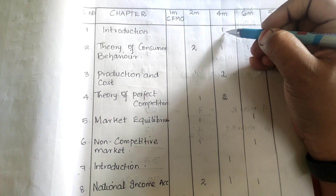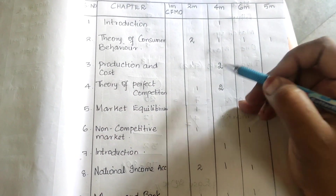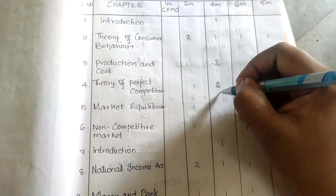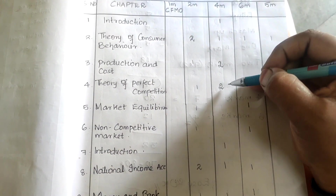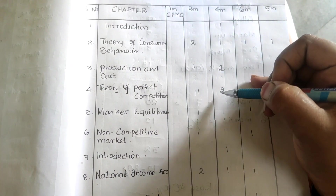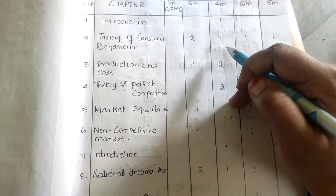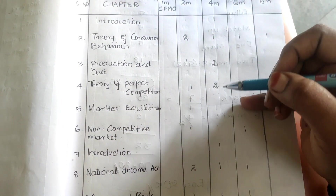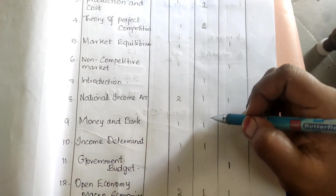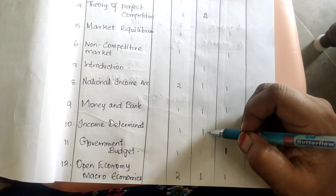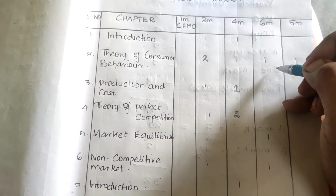For four-mark questions: the first chapter is important, one question from the second chapter, two from the third, and two from the fourth. By preparing just four chapters you can cover four to six questions. Additionally, one question each from the seventh, eighth, ninth, tenth, and twelfth chapters will be asked.